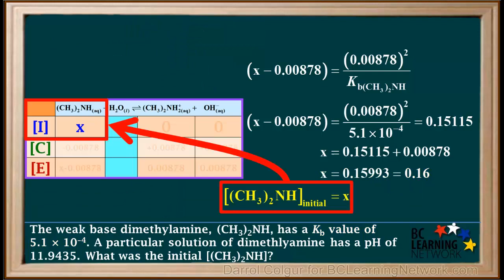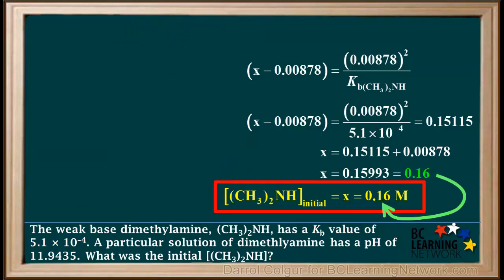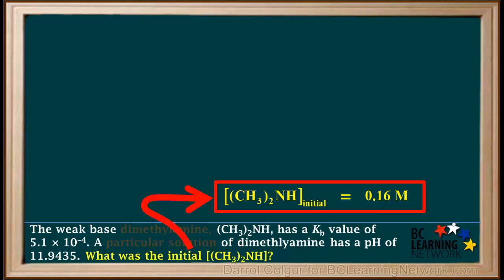In the ICE table, we had defined X as the initial concentration of dimethylamine. So we can say that the initial concentration of dimethylamine equals X equals 0.16 molar. So we've now answered the question this problem was asking. The initial concentration of (CH₃)₂NH, or dimethylamine, was 0.16 molar.